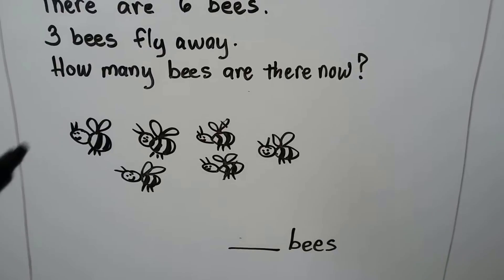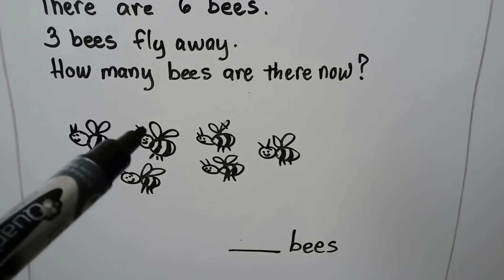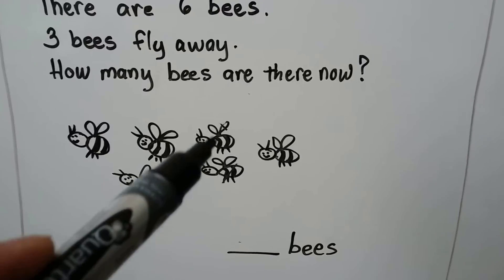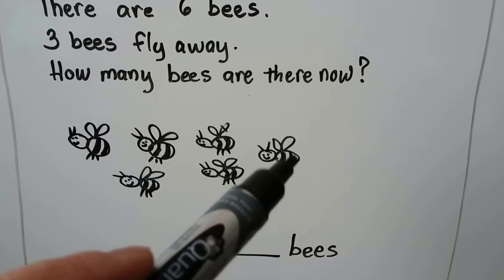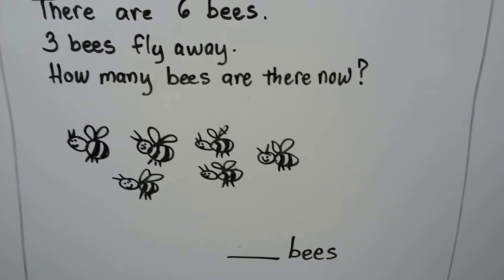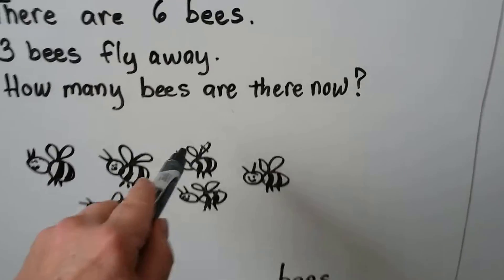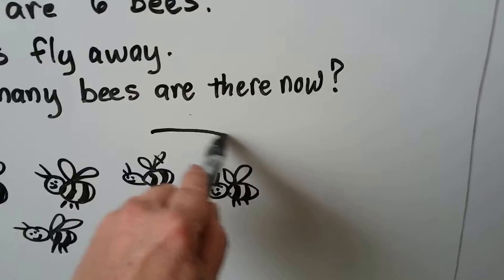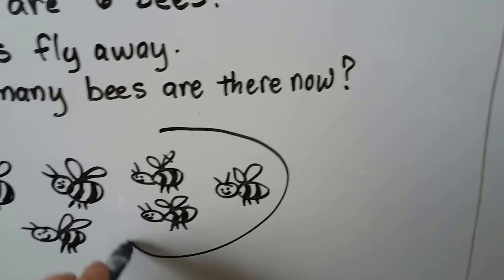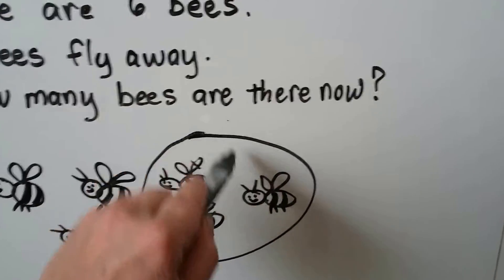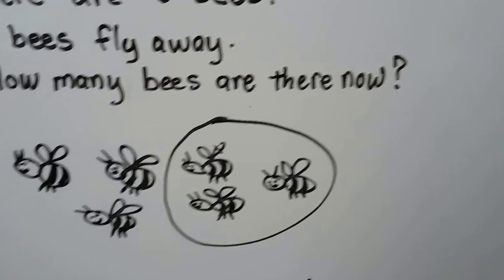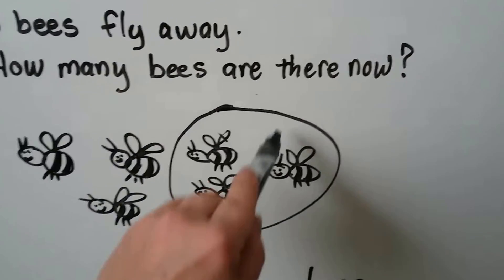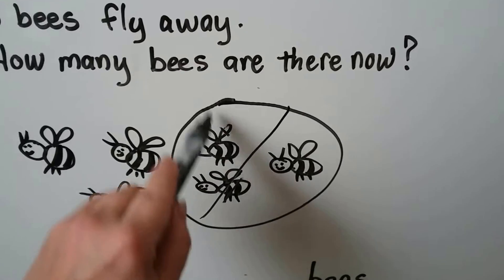There are six bees — one, two, three, four, five, six. Three fly away. We cross them out because they flew away.